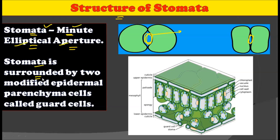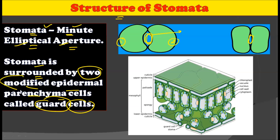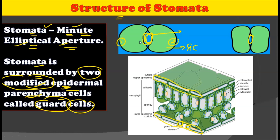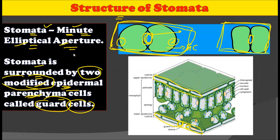Stomata is also surrounded by two modified epidermal parenchymatous cells called guard cells. Both these cells — cell number one and cell number two — are the guard cells. These guard cells are the modified epidermal parenchymatous cells. This is a TS of a typical leaf, and in both the lower and upper epidermal areas we have the epidermal cells. These two epidermal cells are quite modified to perform the function of guard cells. So stomata is the combination of a minute elliptical aperture in the center surrounded by the two guard cells, and this whole structure together is considered as a stomata.